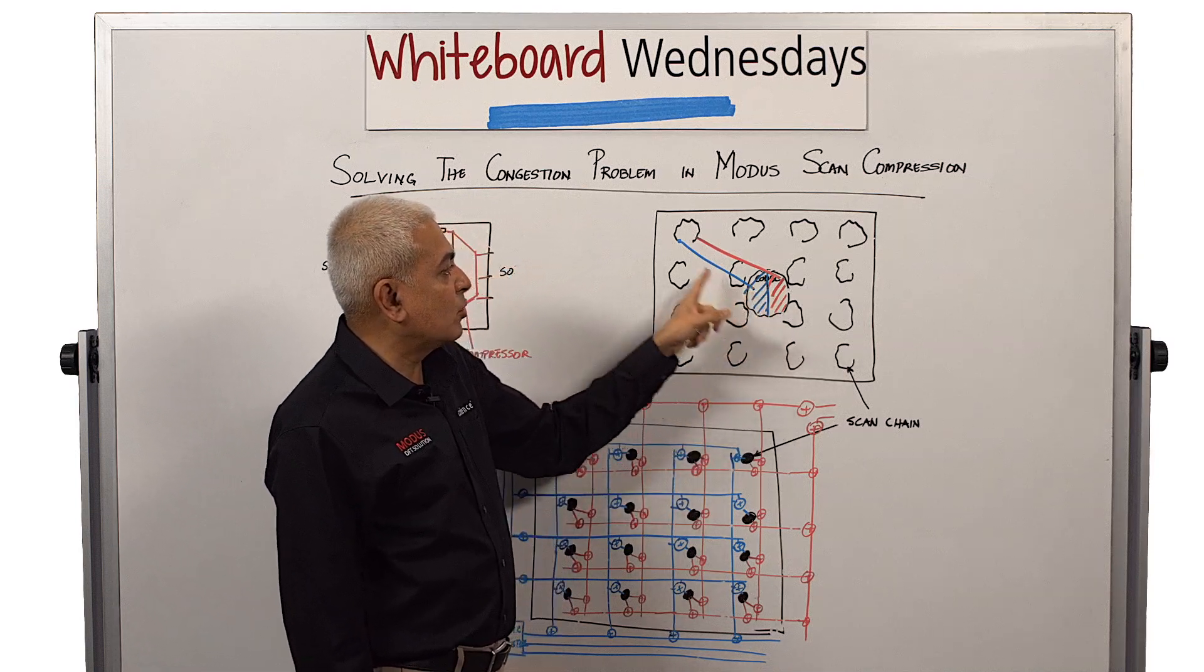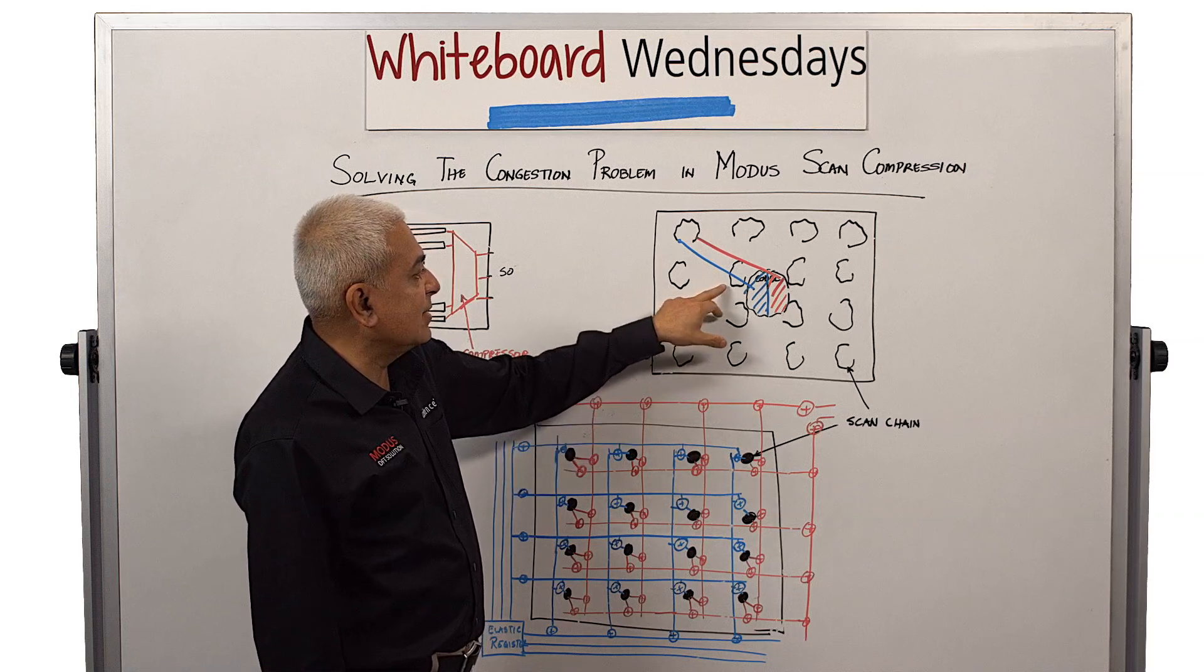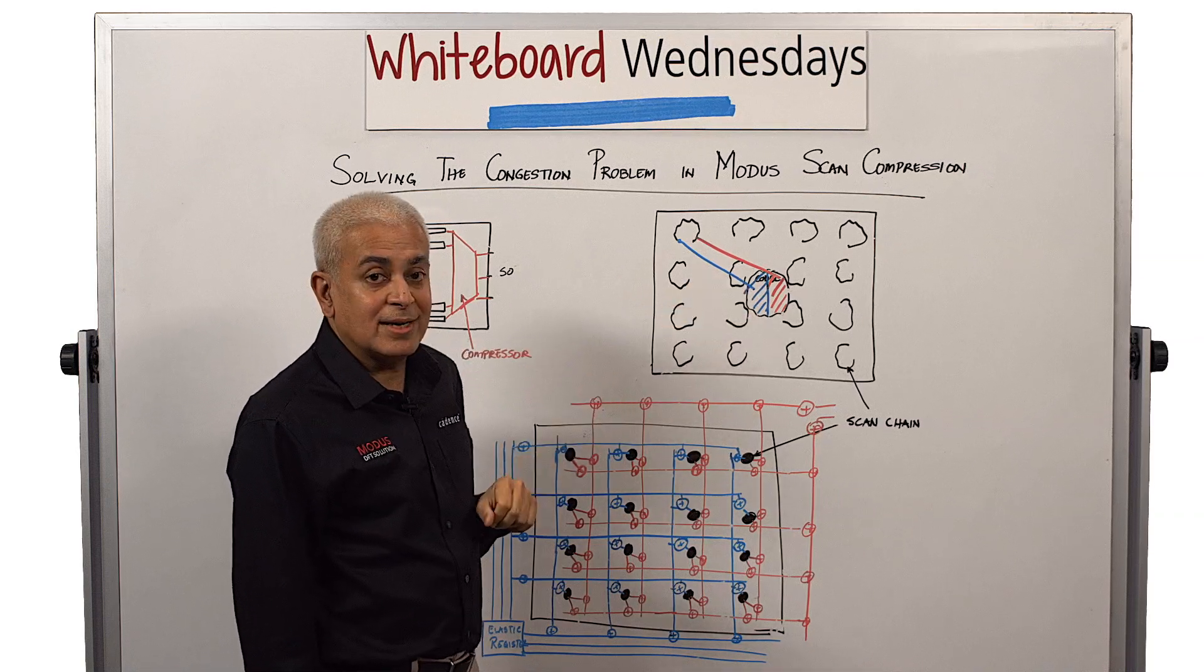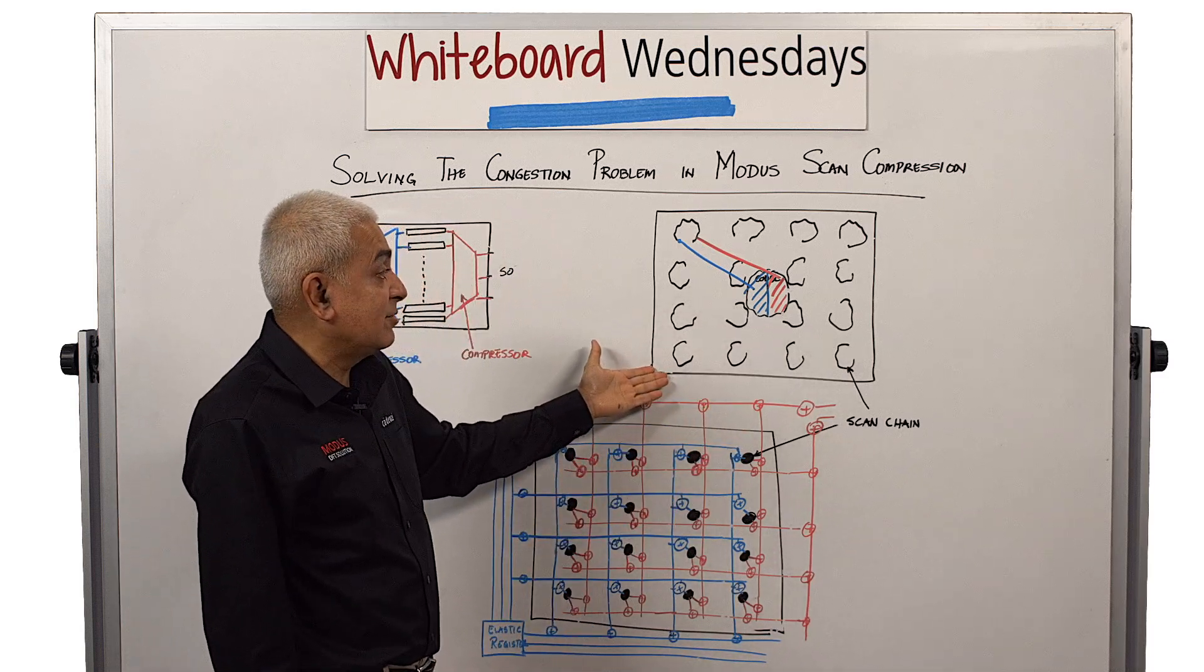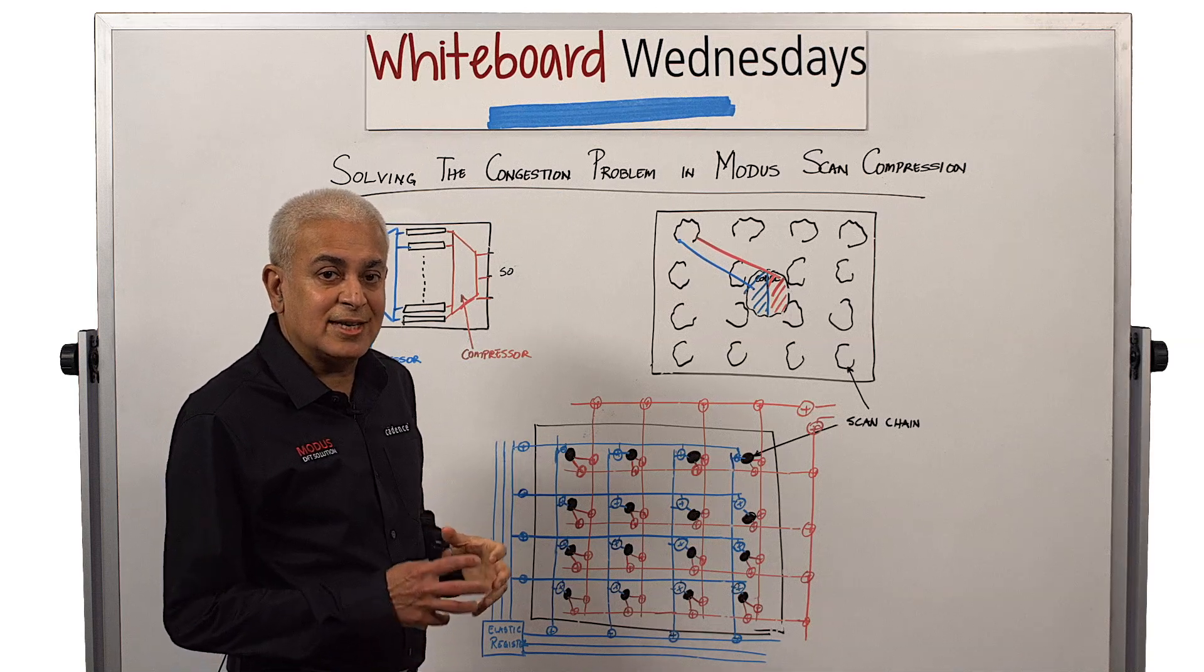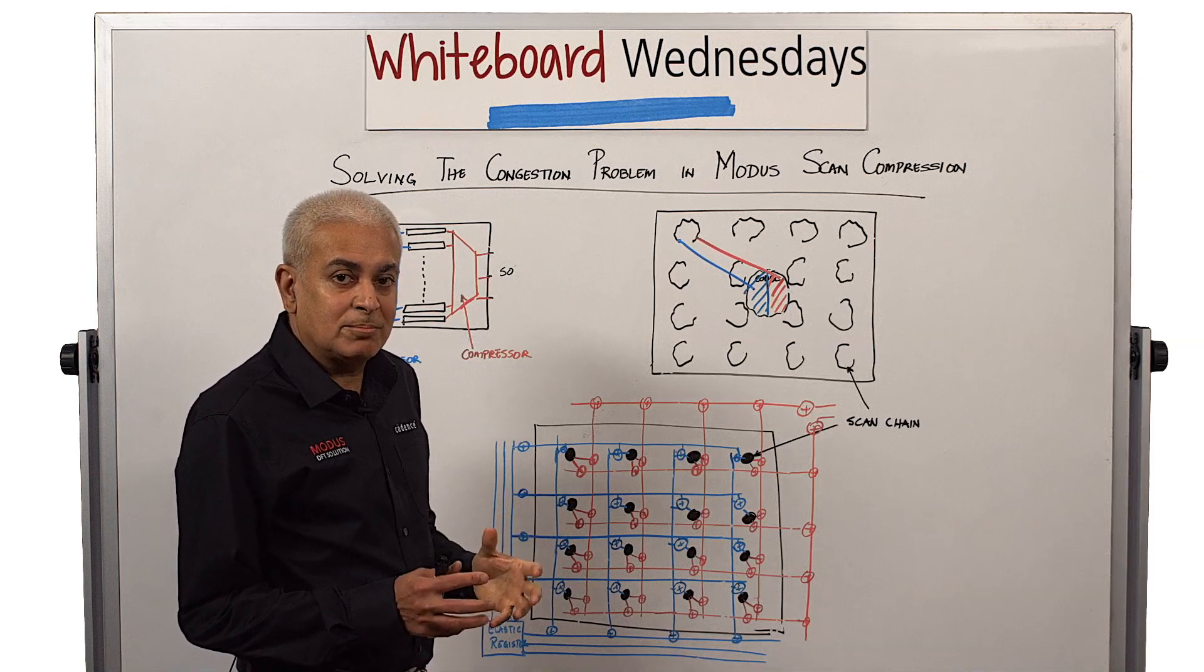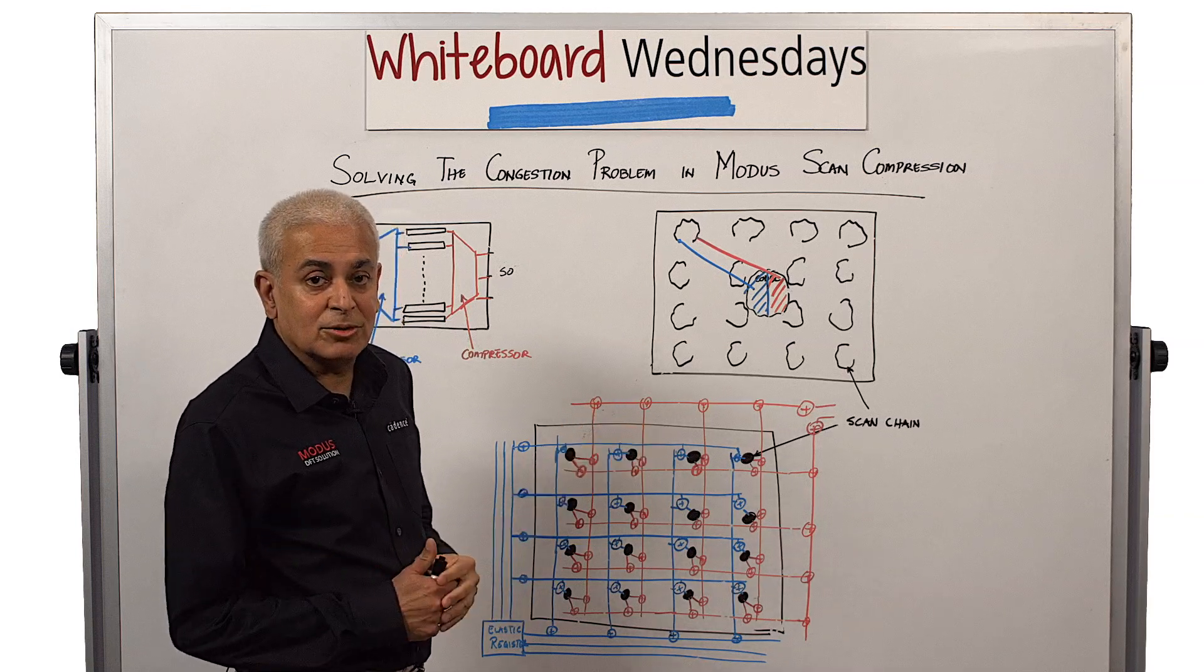There are connections from the codec that go to these distributed scan chains, and that is represented by the blue line and the red lines that you see on the picture. You can very clearly see that there's a serious congestion issue because now you've taken a piece of logic that is located in one part of the design and is going to connect to many distributed scan chains.